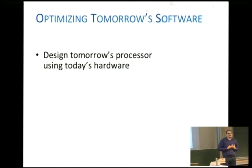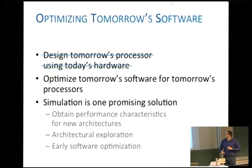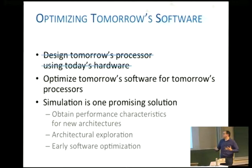What we do at our research group at Yale University is we try to design tomorrow's processors using today's hardware with a simulator. Today we're going to talk about optimizing tomorrow's software for tomorrow's processors. Simulation — and that's what Sniper is, it's a simulator — is one promising solution. We can have detailed analysis of our application and hardware, see how they interact, do architectural exploration, and do early software optimization before the hardware is available.